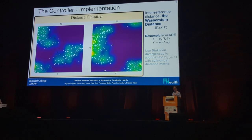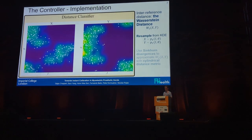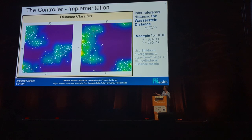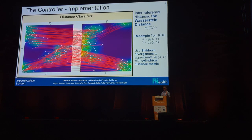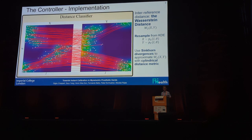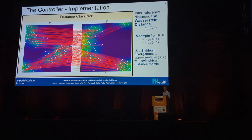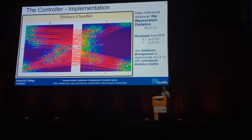Essentially what we do is resample from the kernel density estimates — we take points from the one coming in and something in our reference library. Then we use synchron divergences to approximate the Wasserstein distance with a cylindrical distance metric — a lot of words to say we compute some sort of distance between them. It's an optimization problem, mathematically quite intense, but there are ways to speed it up with these divergences.